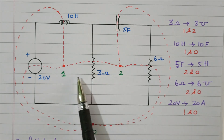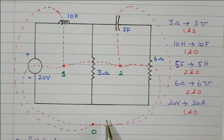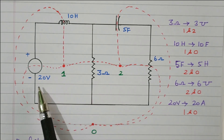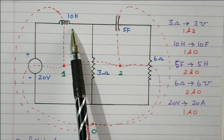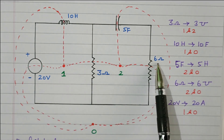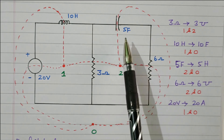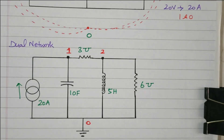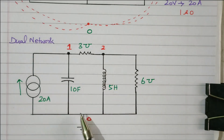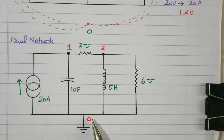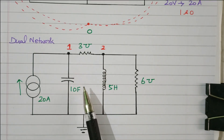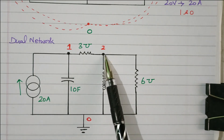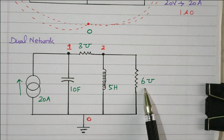We place three dots: 1, 2, and 0. Between 1 and 2: 3 Mho conductance. Between 1 and 0: 20-ampere current source and 10-Farad capacitor. Between 2 and 0: 6 Mho conductance and 5-Henry inductance. That is how we connect all the elements to form the final dual network.